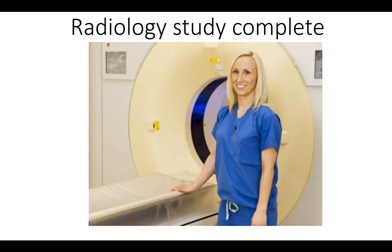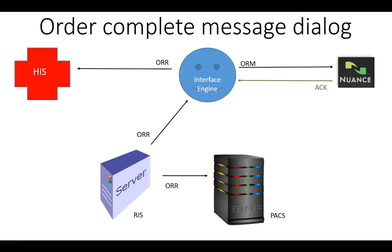The CT tech completes the study, does a quality check, sends the images to PACS, confirms the study is in PACS, then ends the study in the RIS. When the tech marks the study completed, the ORR goes to the interface engine, gets validated, copied, formatted, and sent to the HIS to let the nurse know the study is done. The RIS sends a duplicate to the PACS, which lets the radiologist know the study is ready to be read. Note that in some places you'll hear 'copy' and in others 'duplicate' — that distinction matters a lot to interface engineers.